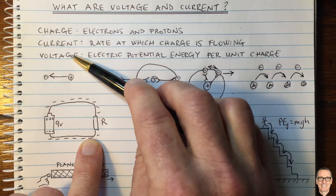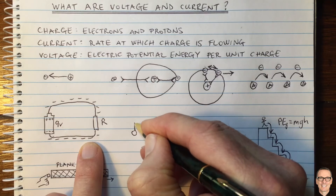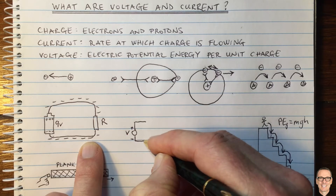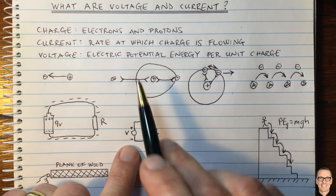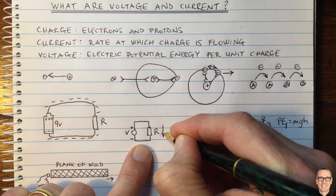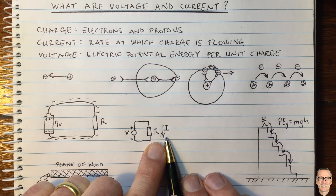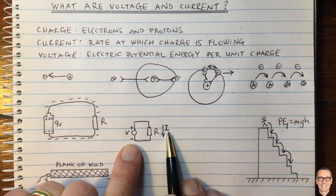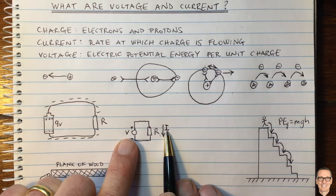Now let's link voltage and current. Consider a circuit with a voltage V across a battery and a resistor R. Because we've completed the circuit, charges flow and therefore we have current. Traditionally, we draw an arrow for the direction of current in the direction that a positive charge would travel — that's just a historical convention — so the electrons are going in the opposite direction to the indicated current.